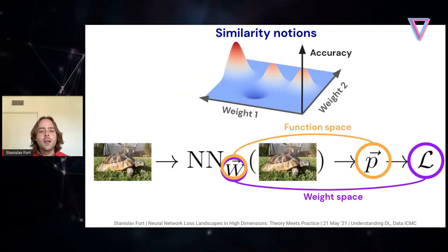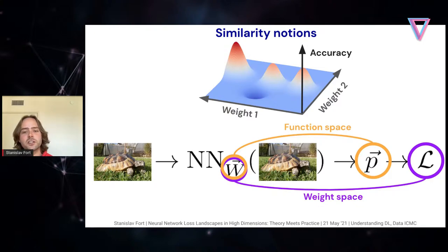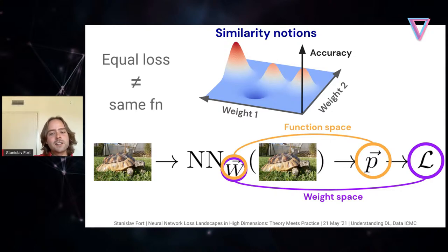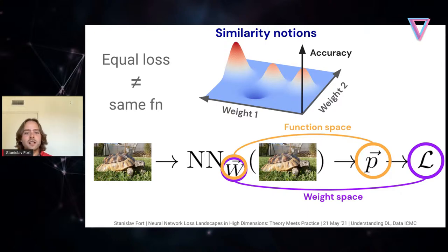The second notion is function space: the connection between the weight vector and the probabilities output by the network for a given input. It's the mapping not to the aggregate statistic (the loss), but to the detailed predictions on individual images. Importantly, equal loss doesn't mean equal functions. Two networks can be equally accurate on the test set, making the same number of mistakes, but placing those mistakes on different images. So equal loss doesn't mean the same function.